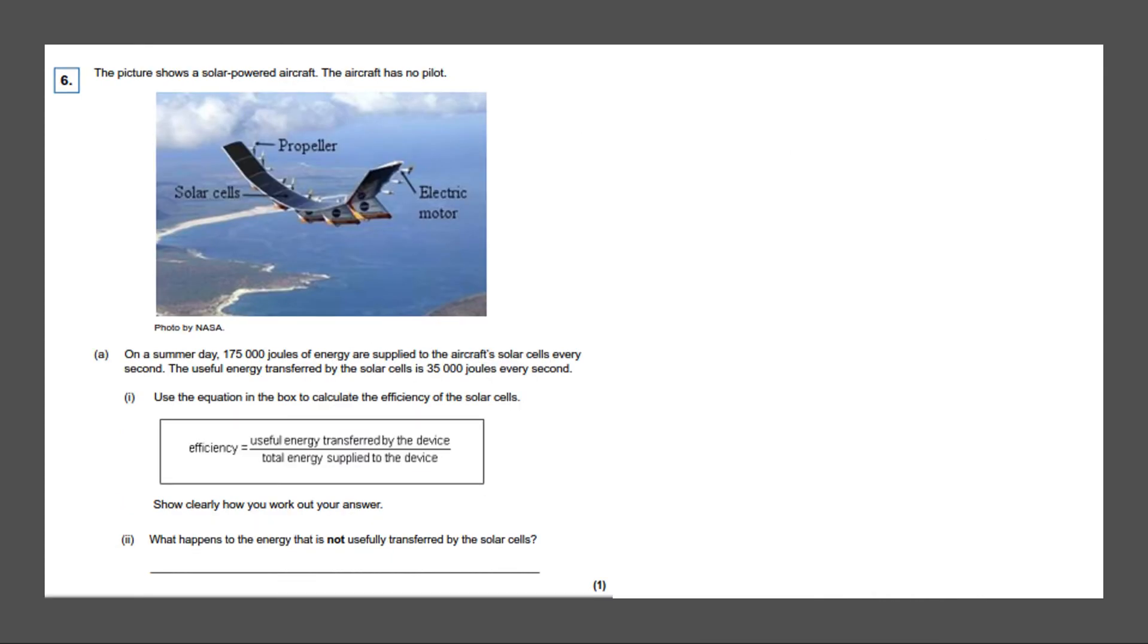Last question. The picture shows a solar powered aircraft. The aircraft has no pilot. On a summer's day, 175,000 joules of energy are supplied to the aircraft solar cells every second. The useful energy transferred by the solar cells is 35,000 joules every second. Use the equation in the box to calculate the efficiency of the solar cells. So we're given the equation over here.